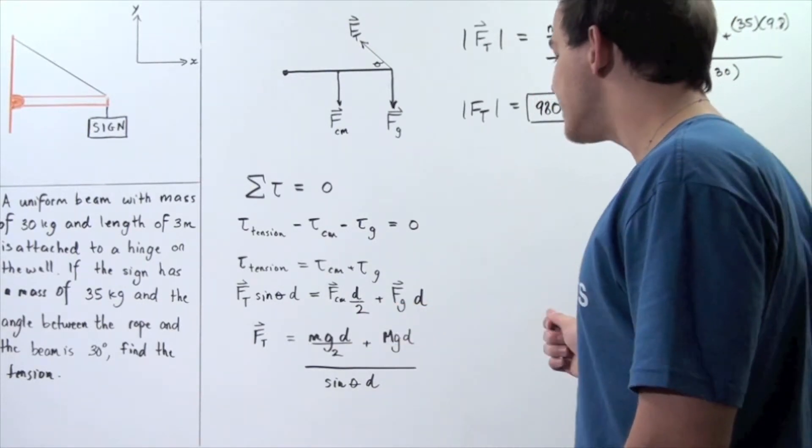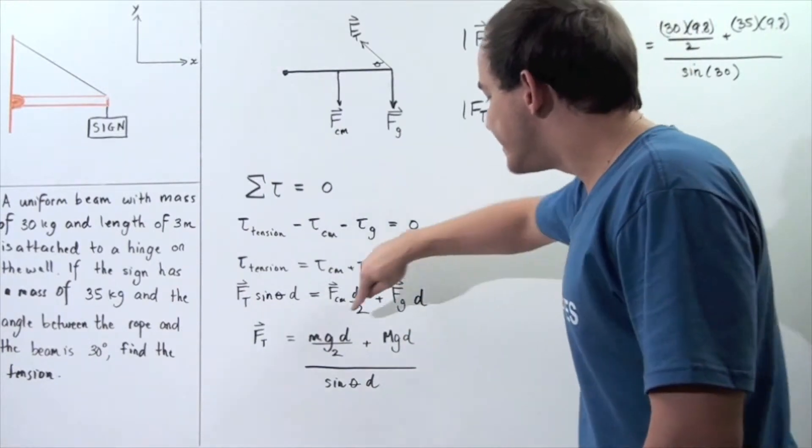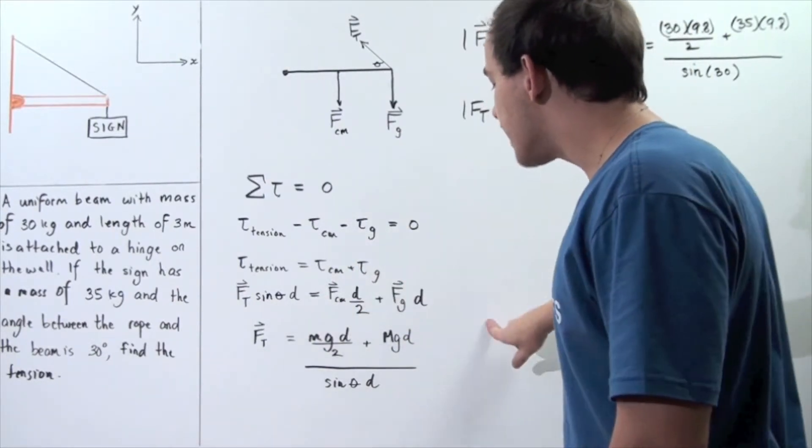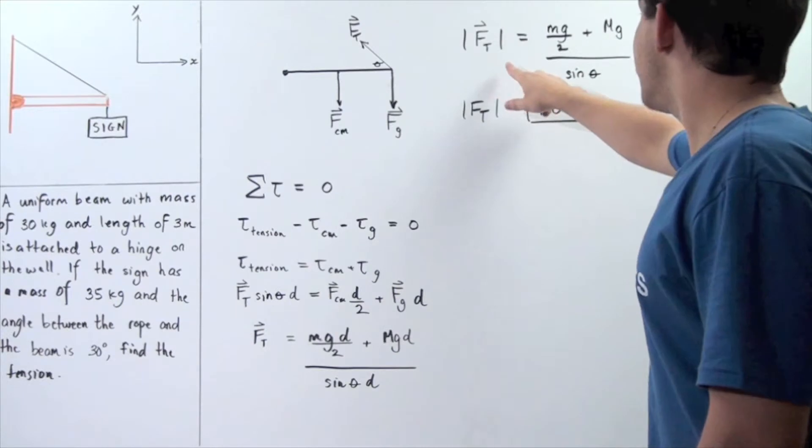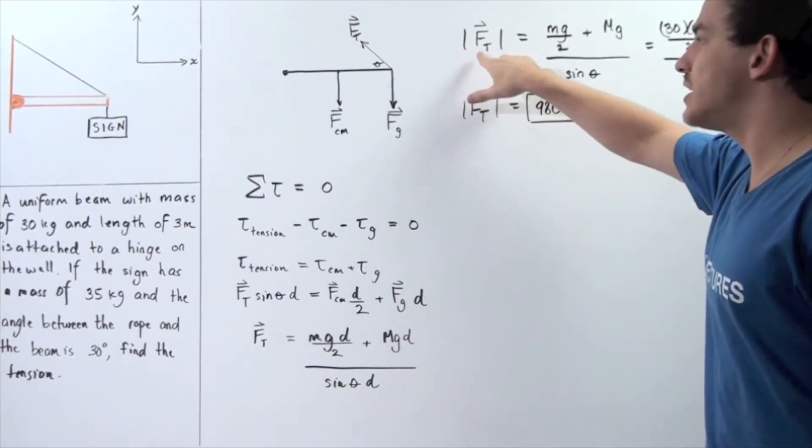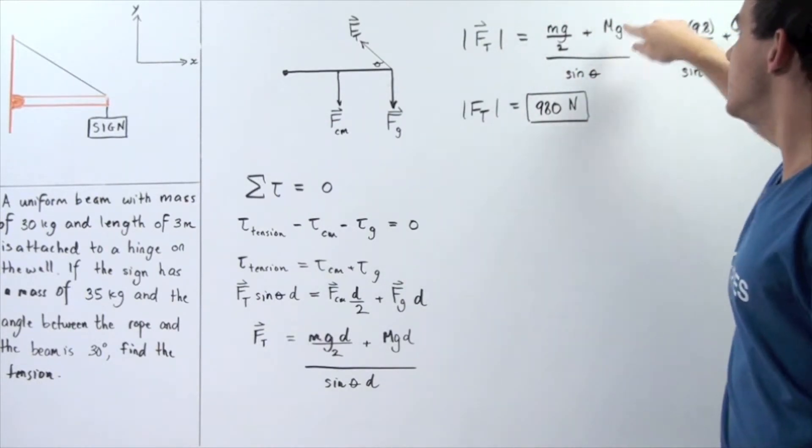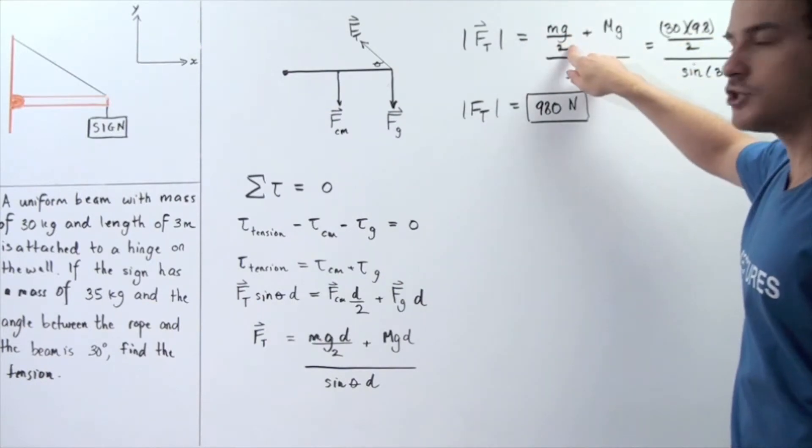G is simply our gravitational constant and D is our lever arm. Notice D's appear on top and bottom, so we can cross them out to get the following result. The magnitude of the tension in the rope is equal to Mg plus Mgd, where this term is divided by 2.